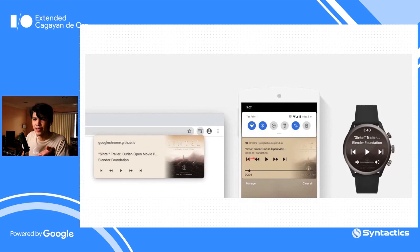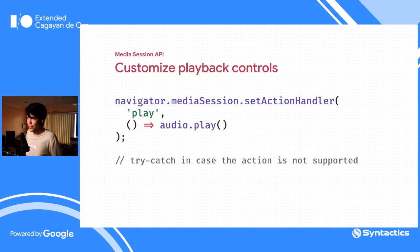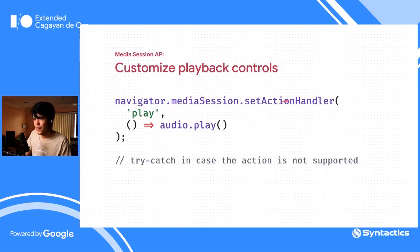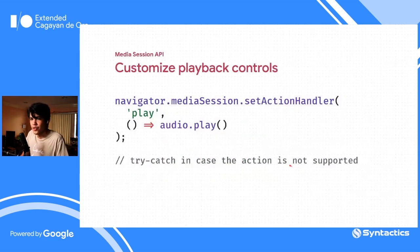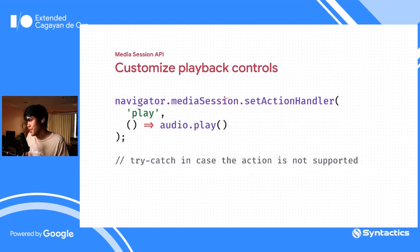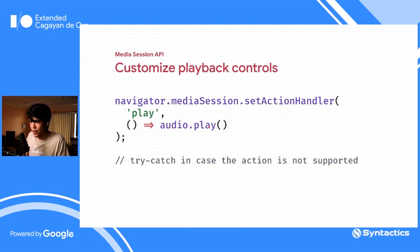To define what happens when the user clicks play, pause, or seek, call navigator.mediaSession.setActionHandler() with the action name and a callback function. By default, if you don't define an action handler for an action, that button won't be displayed in the notification. So if you don't set a handler for 'play', the play button won't appear. Supported actions include play, pause, previoustrack, nexttrack, stop, seekforward, seekbackward, and seekto.